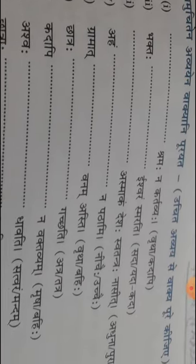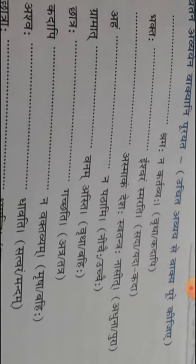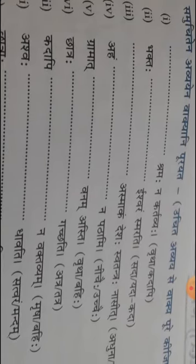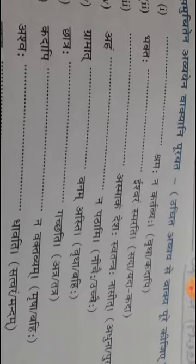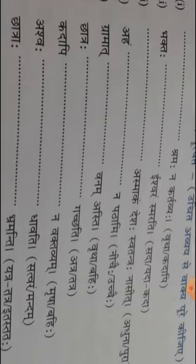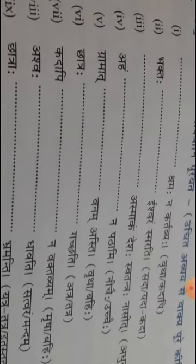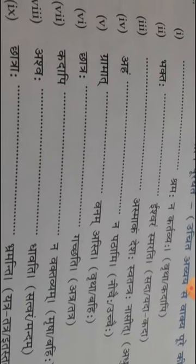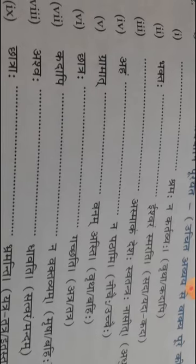Number three. Dash. Asmakam desha satantrata nasit — so once our country was not independent. Two options: Adhuna, nao, poora, and shi. Four. Aham dash na pathami. Neechai means very slowly and ucchai means loudly.